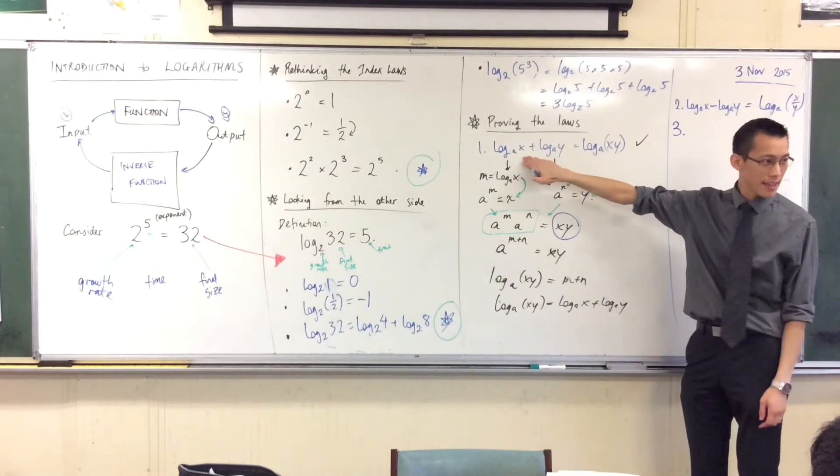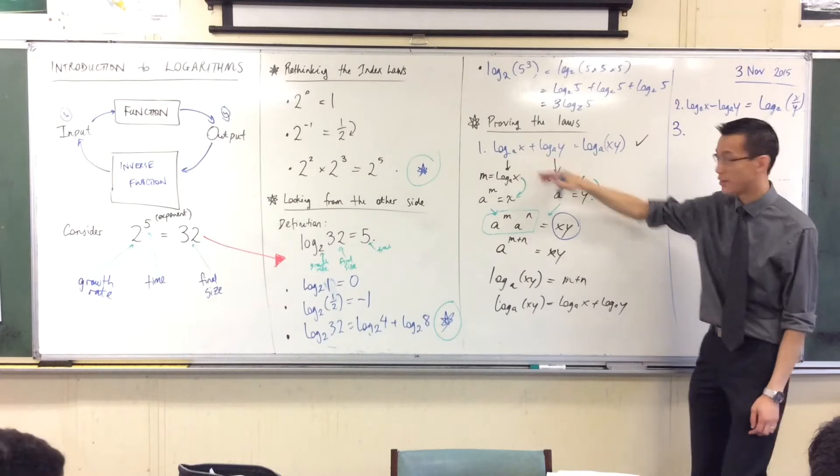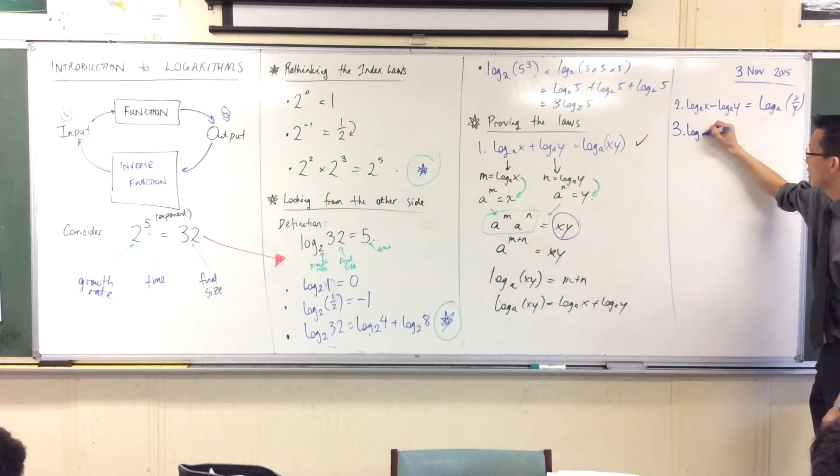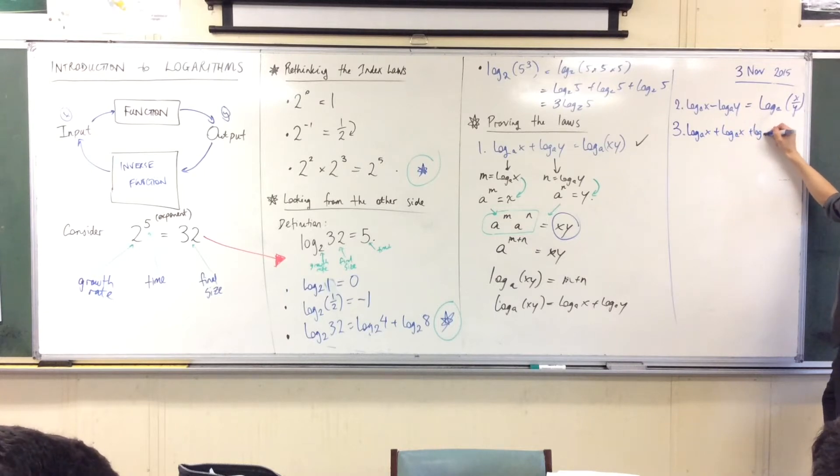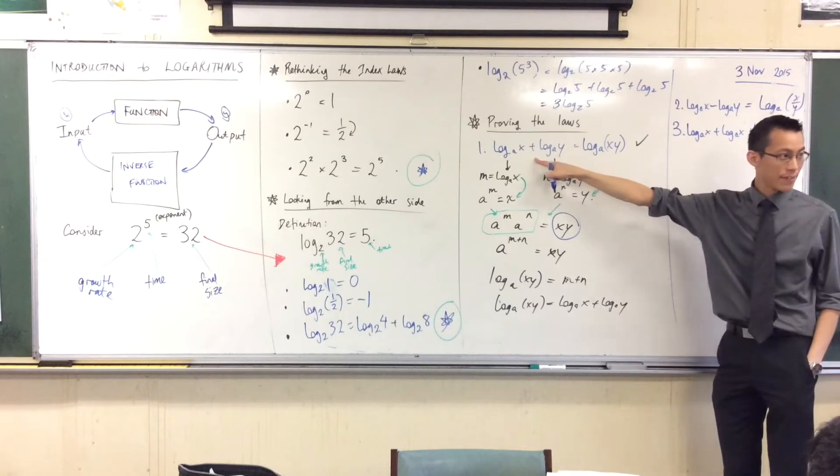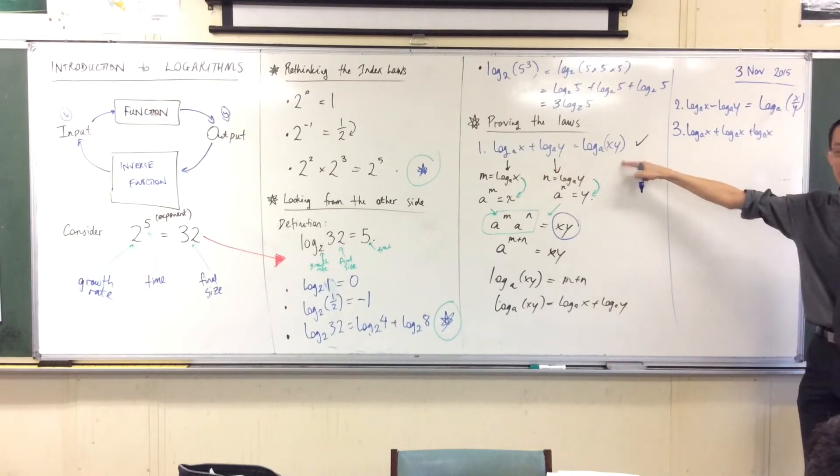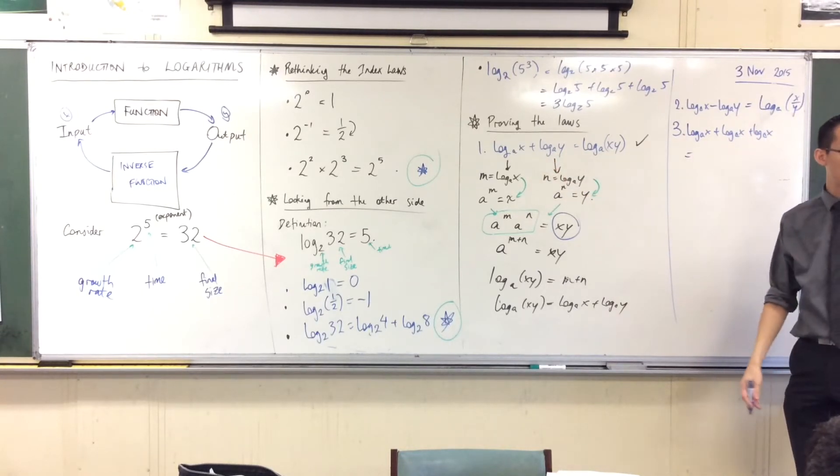If you add this over and over again, right, over and over again, if I go log_a(x) plus log_a(x) plus log_a(x), so for example if I have three of them, right? Adding logs turns into multiplication. So what do you expect this to become?